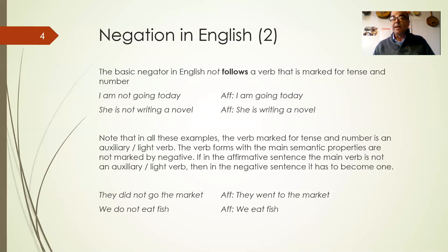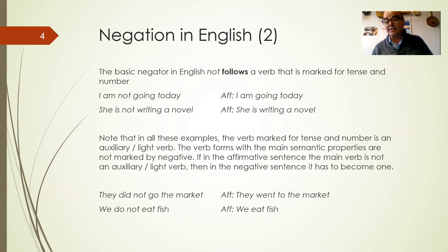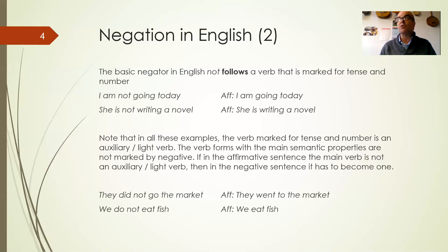So if we take a sentence like 'they went to the market,' we do not negate it by saying 'they went not to the market.' We negate it by saying 'they did not go to the market.' You derive the form 'did go' from 'went,' and then mark the negation after the part of the verb marked for tense and aspect — namely the 'did' form. Or for 'we eat fish,' the negative is 'we do not eat fish' — we don't say 'we eat not fish.'